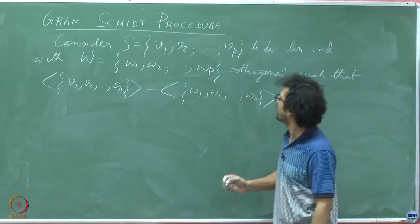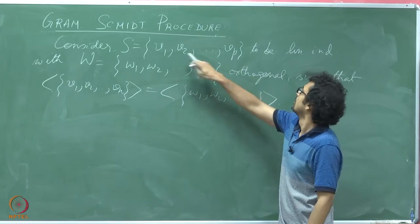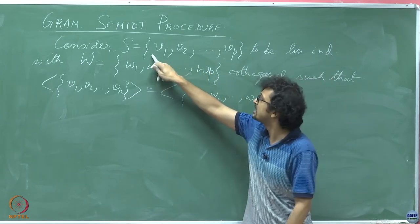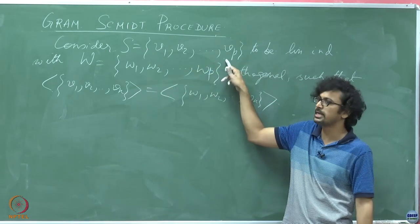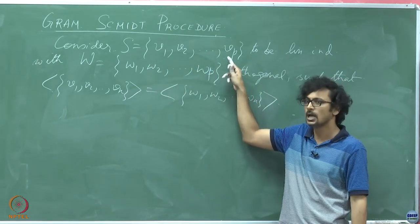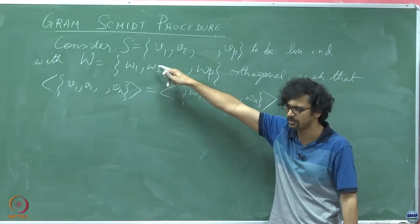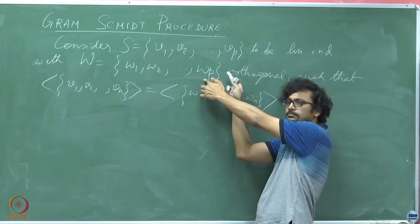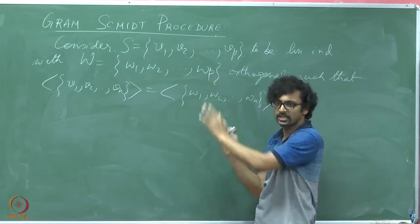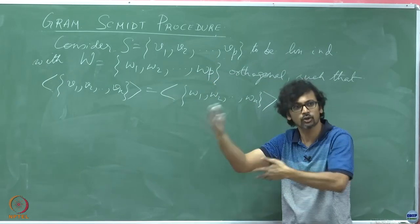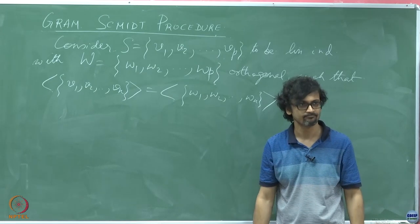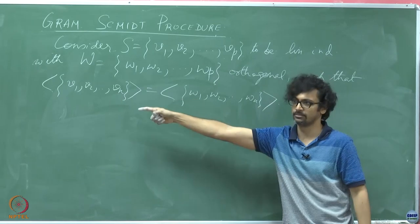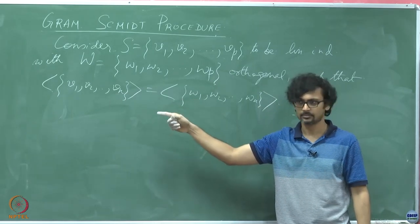Now, given that there is this V P plus 1, suppose someone extends this linearly independent set to contain just one more fellow than this P number of fellows that have already been given to me, how do I cook up the corresponding P plus first fellow in this set W as well while preserving that orthogonal structure, and also ensuring this inclusion?